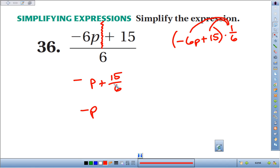Negative p, 15 over 6 reduces. They're both divisible by 3. Dividing the numerator by 3, we get 5. Denominator by 3, we get 2.